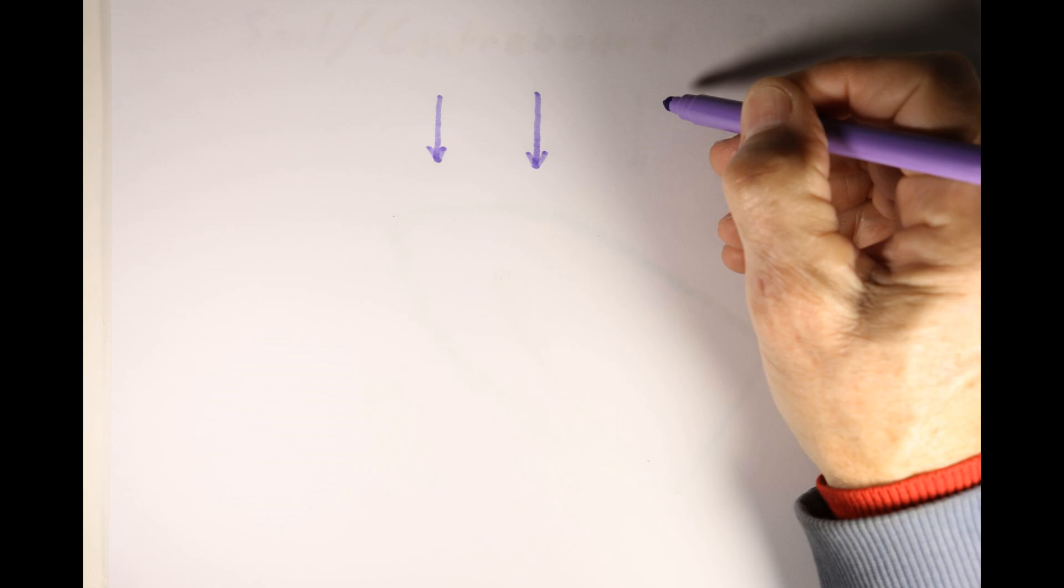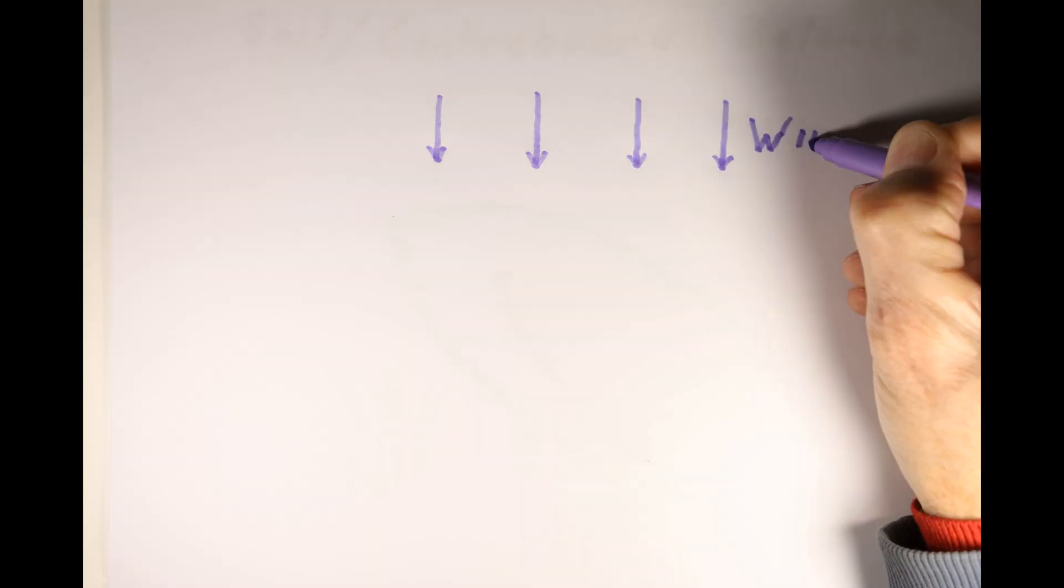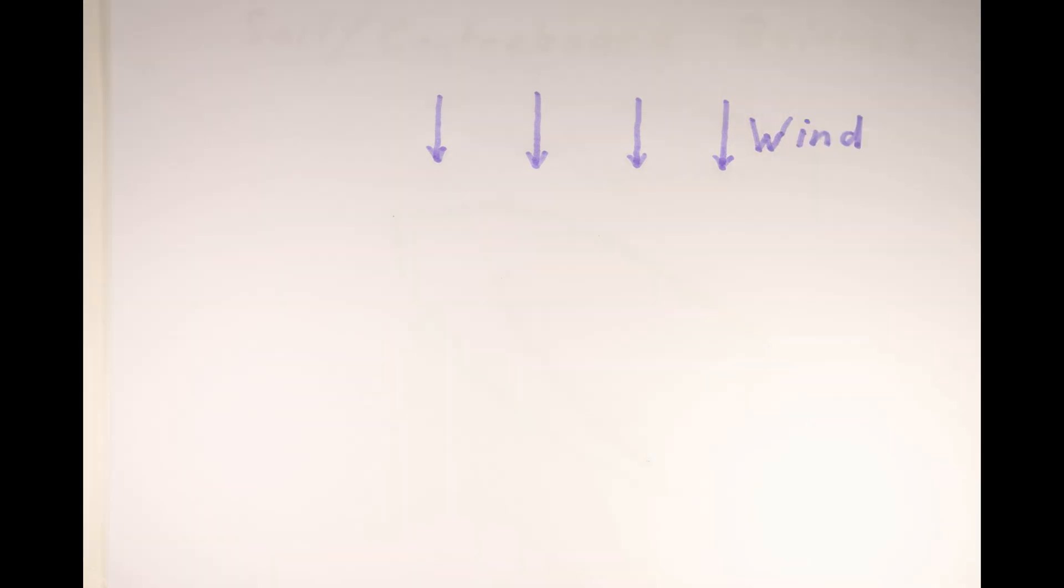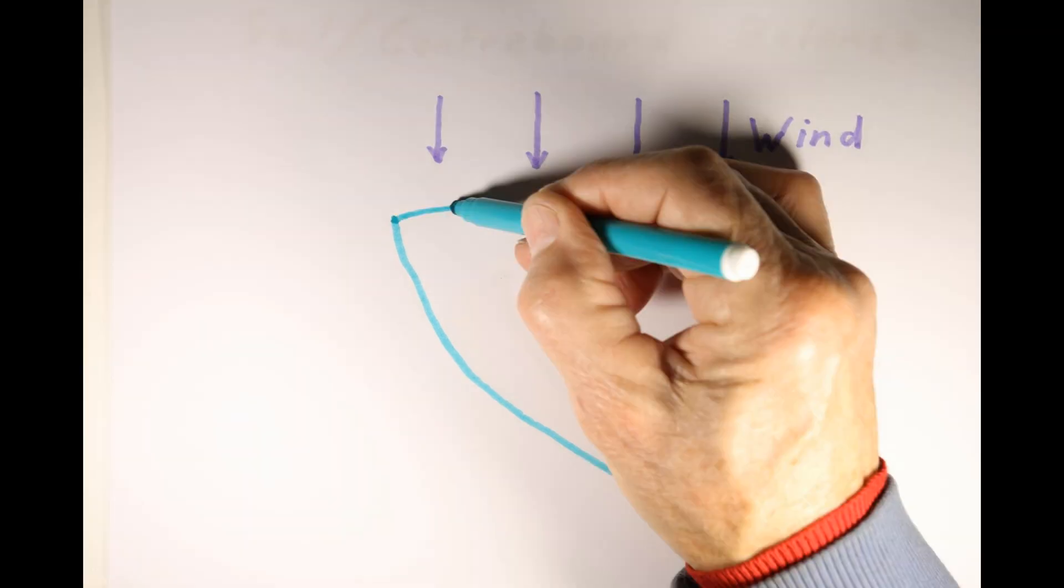This video is about the sail and centreboard balance. Let's assume the wind is blowing from the top of the screen to the bottom. Let's also position our boat at 45 degrees to the wind.